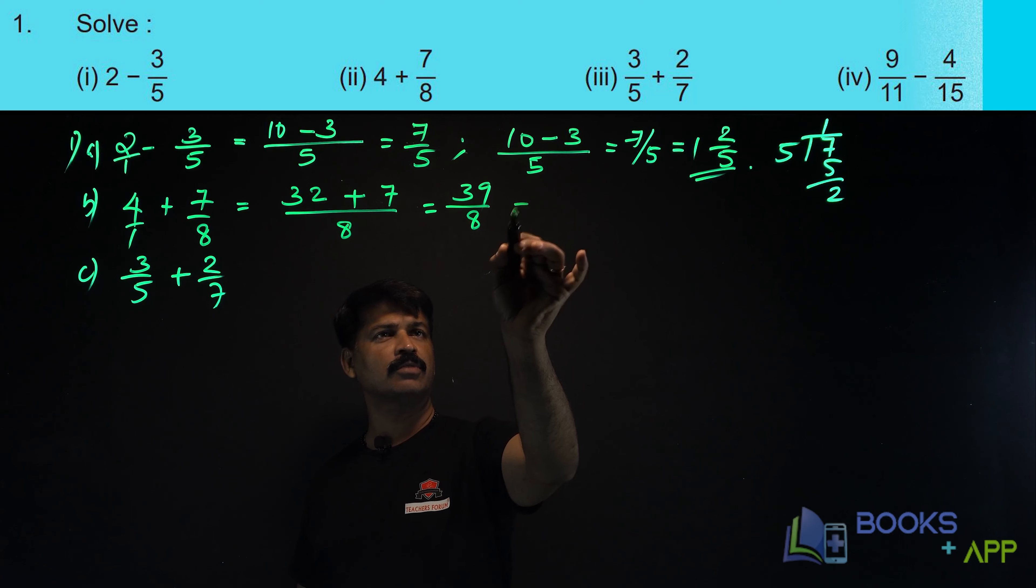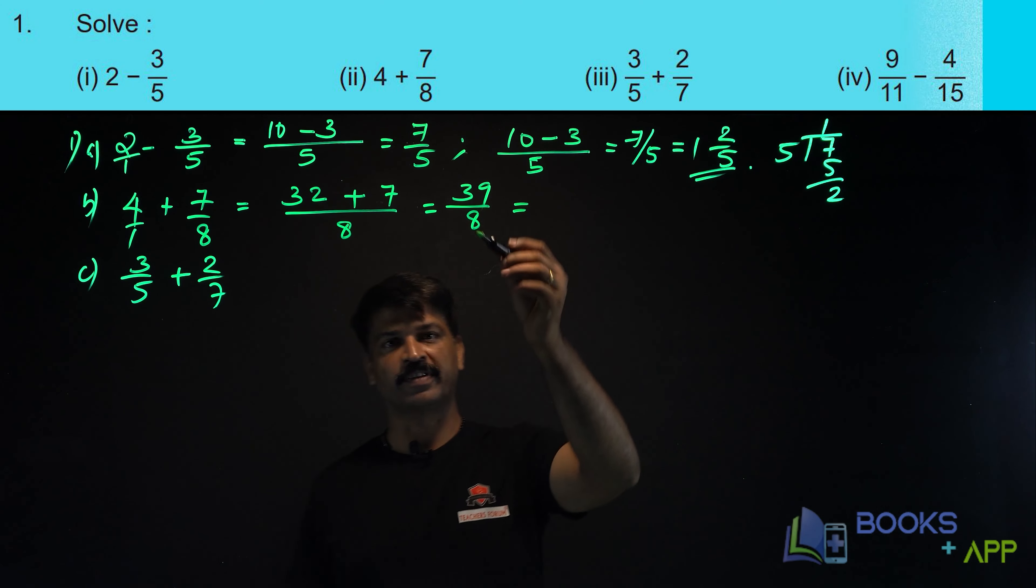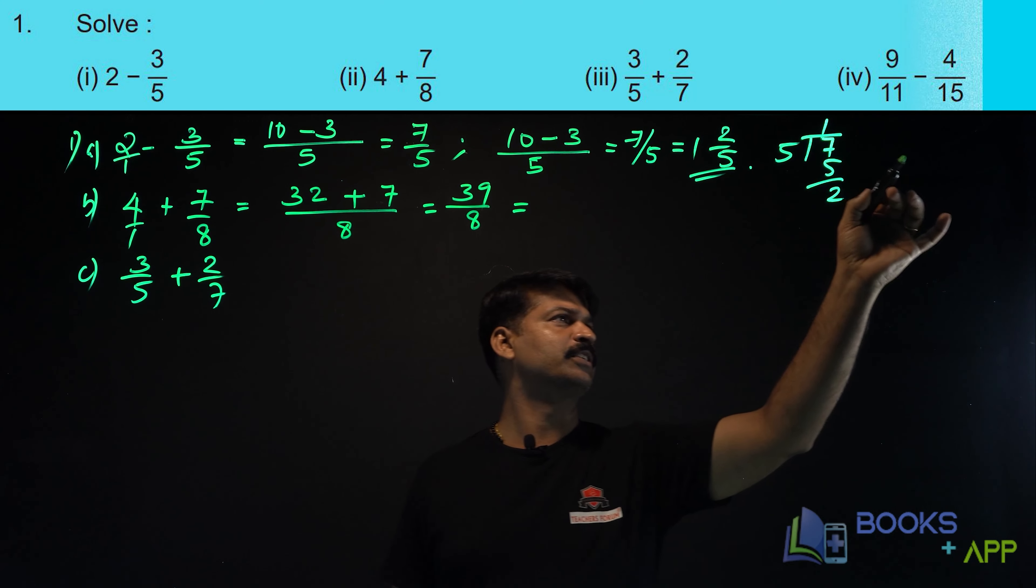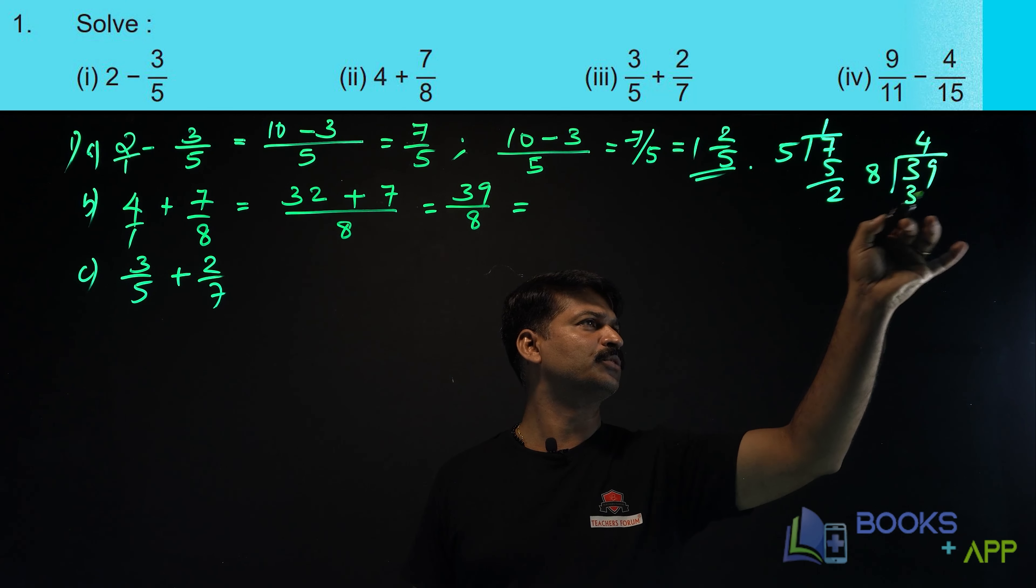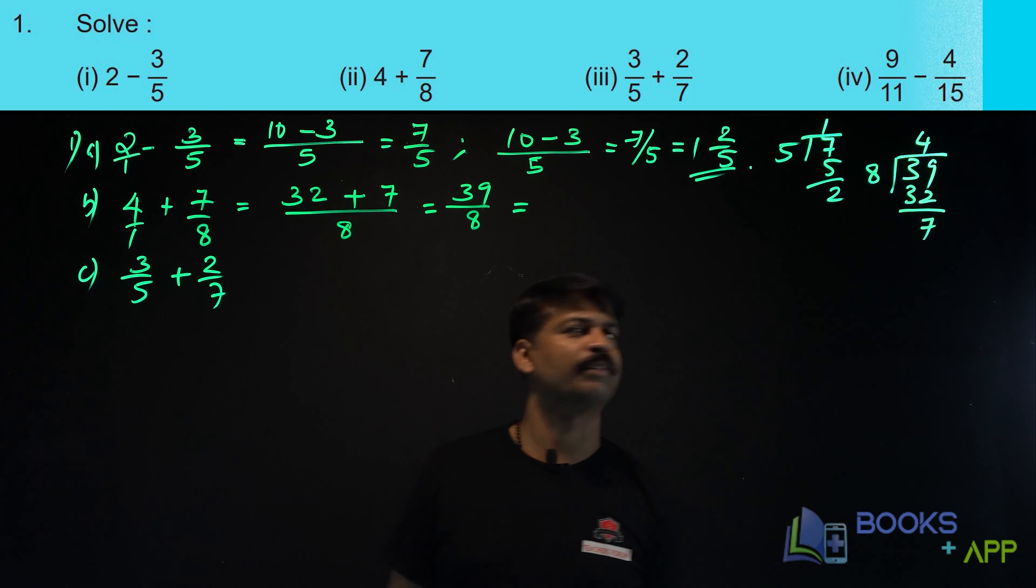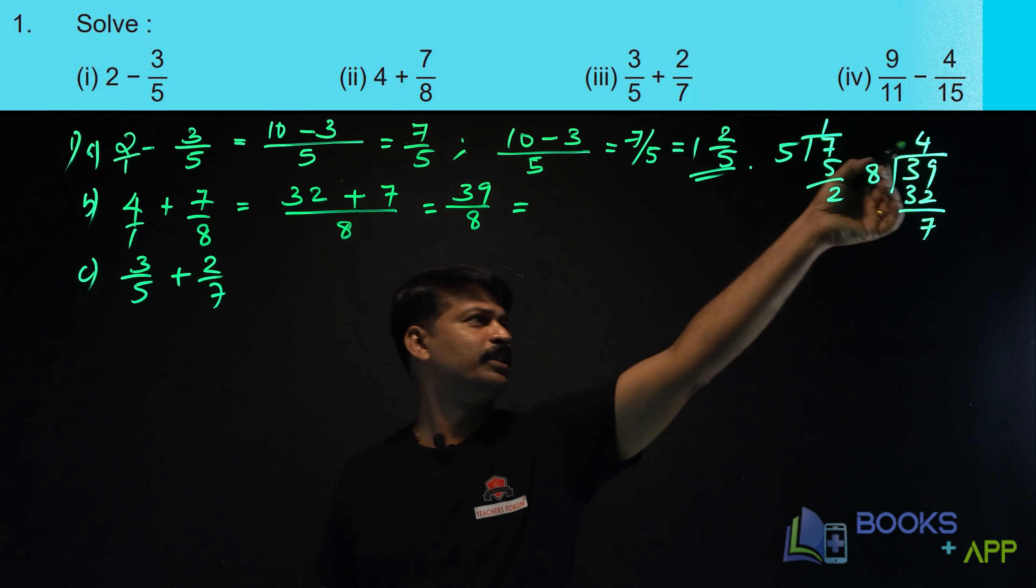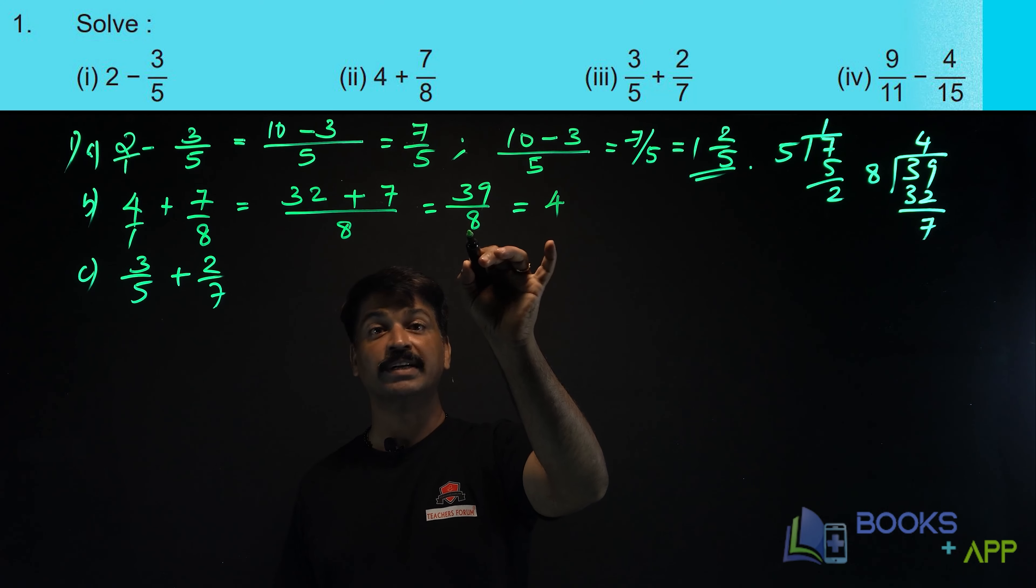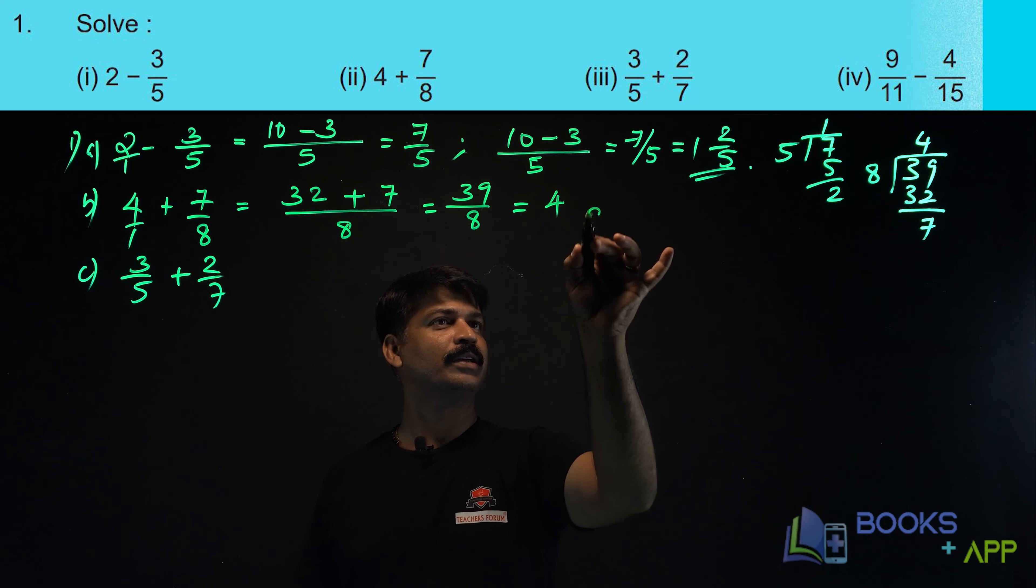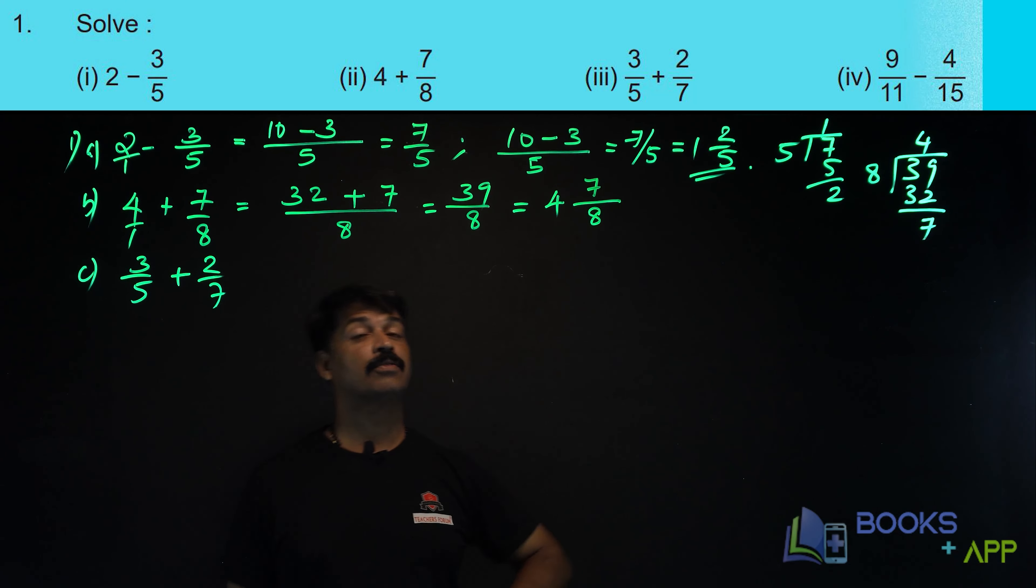Similarly, how can you convert this into mixed fraction? It is improper fraction, isn't it? 39 is greater. 39 by 8. How can you solve this? 4 8's are 32. What is remaining? 7. So, how can you write this? You see, this is the caution. This is the answer that you have to write first. We divided by 8. So, that 8 should be the denominator. 7 remainder, you should write there.